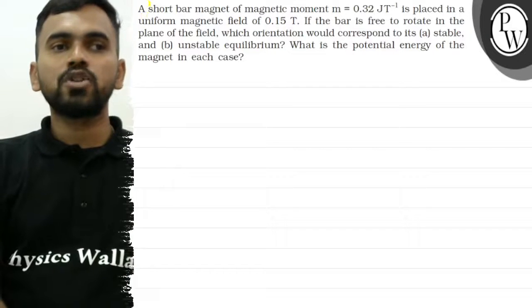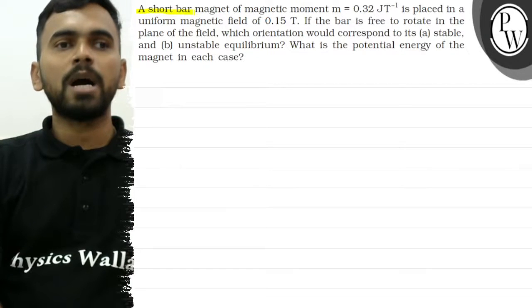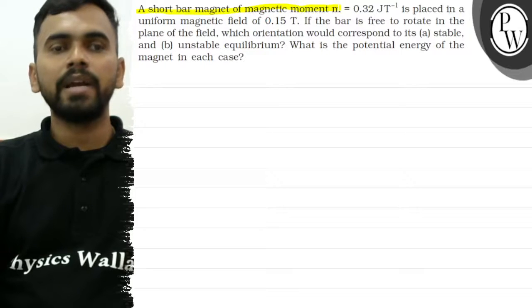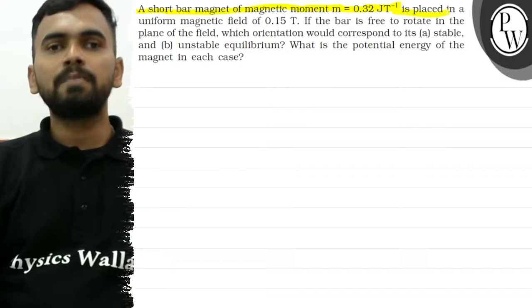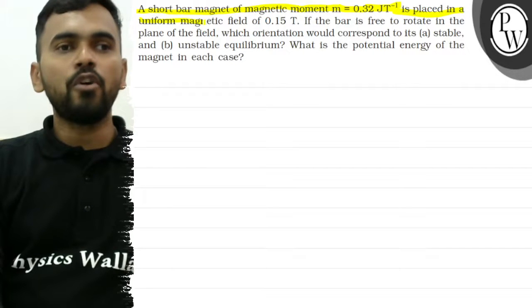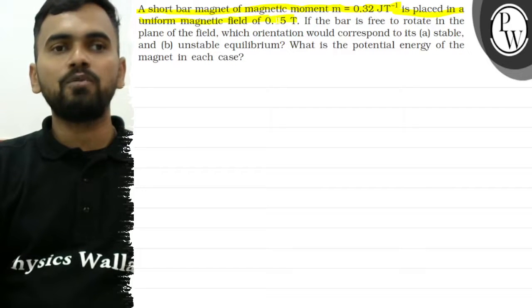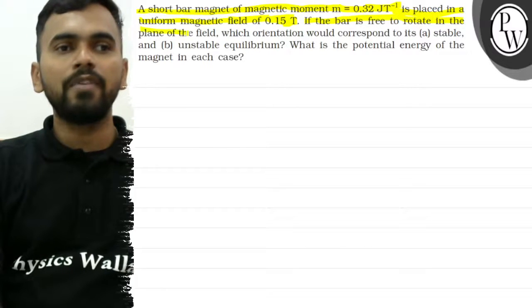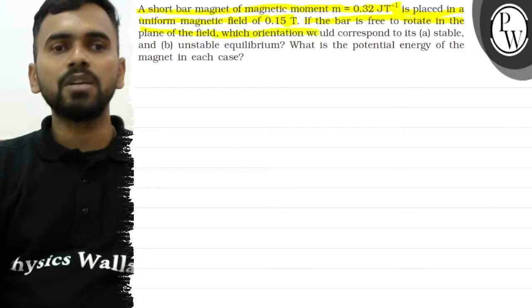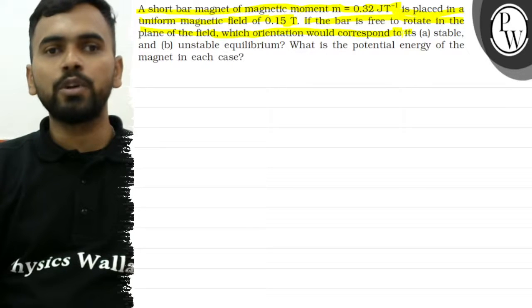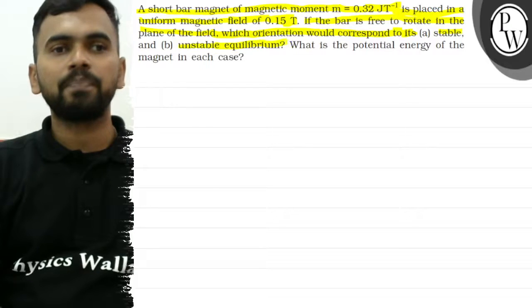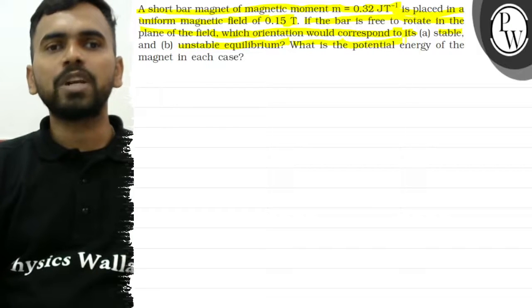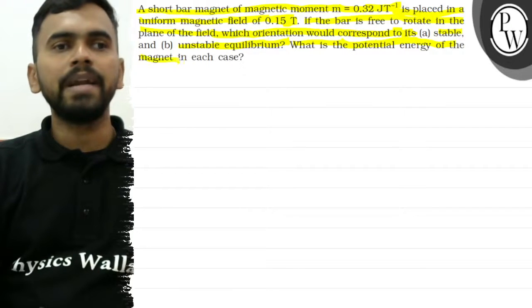Let's see the question. A short bar magnet of magnetic moment m equals 0.32 joule per tesla is placed in a uniform magnetic field of 0.15 tesla. If the bar is free to rotate in the plane of the field, which orientation would correspond to its stable and unstable equilibrium? What is the potential energy of the magnet in each case?